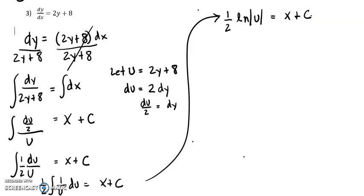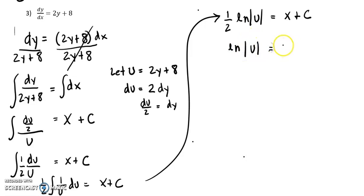We do have an ln in it, so we do have to do step three: get the ln all to one side by itself. Multiply both sides by 2, so ln of absolute value of u equals 2x plus 2c. Since 2c is just a constant, we can call it c1.